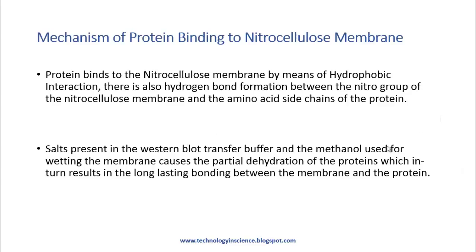Let's look at the mechanism of protein binding to the nitrocellulose membrane. Protein binds to the nitrocellulose membrane by means of hydrophobic interaction, that is hydrogen bond formation between the nitro group of the nitrocellulose membrane and the amino acid side chain of the protein. The salts present in the Western blot transfer buffer and the methanol used for wetting the membrane cause partial dehydration of the proteins, which results in long-lasting bonding between the membrane and the protein.